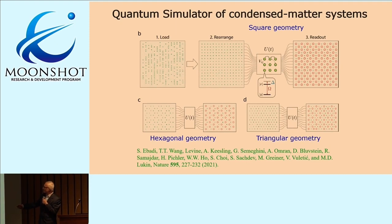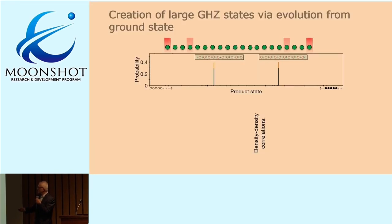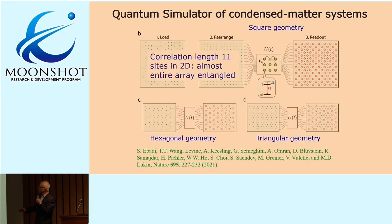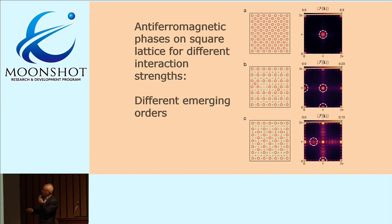Two years or three years later, 2021, we did similar experiments in 2D. Here we sort the system into either a square lattice or a hexagonal lattice or a triangular lattice, and then apply this antiferromagnetic interaction. You see these nice antiferromagnetic patterns that you can do in all geometries. In these systems, now the interaction correlation length is now 11 in each direction. So basically, almost the whole thing, the whole 200 something atoms are entangled with one another and strongly correlated.